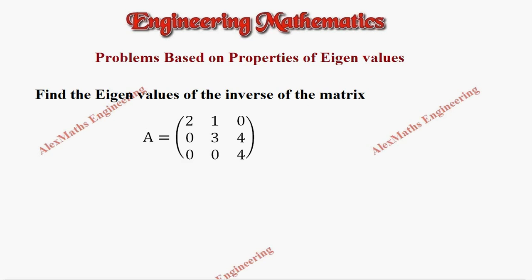If we observe the matrix, you can see that it is a triangular matrix. We have elements in the leading diagonal and we have elements present in the upper part of the matrix, and the lower part elements are zero.